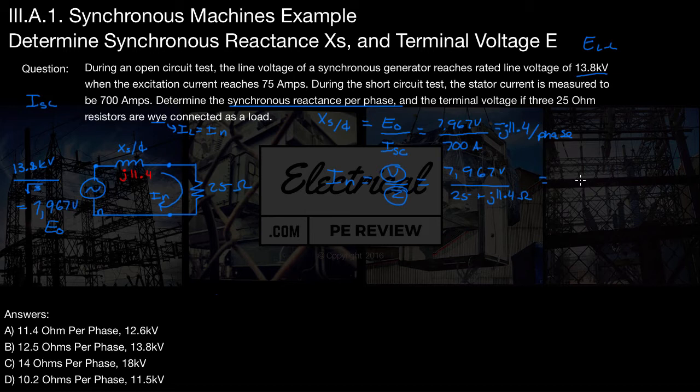We punch this in our calculator using complex math. We come up with IN is going to equal 290 amps at a phase angle of negative 24.5 degrees. Now really quick, you're going to notice in the answers, we only have magnitudes.